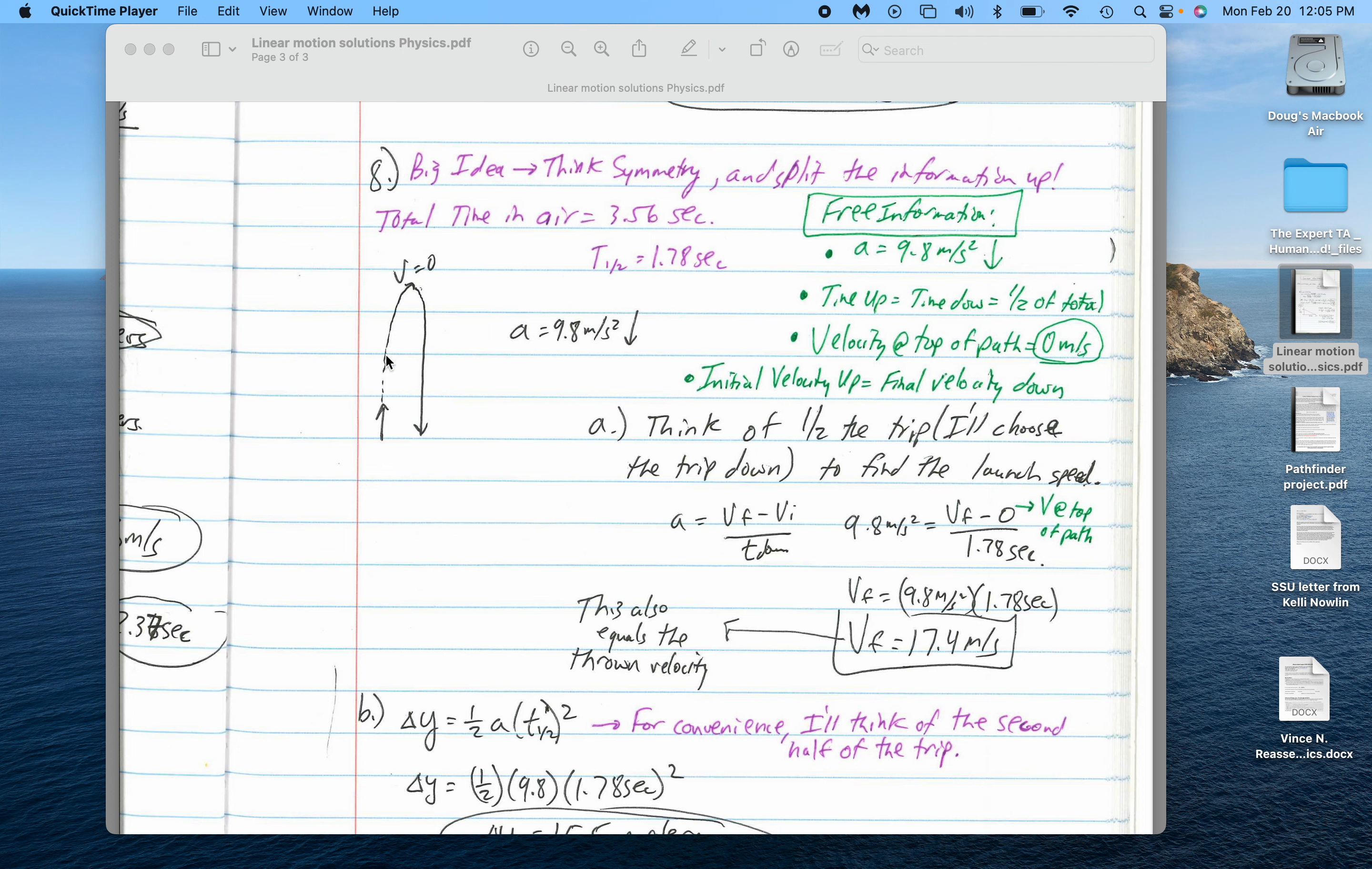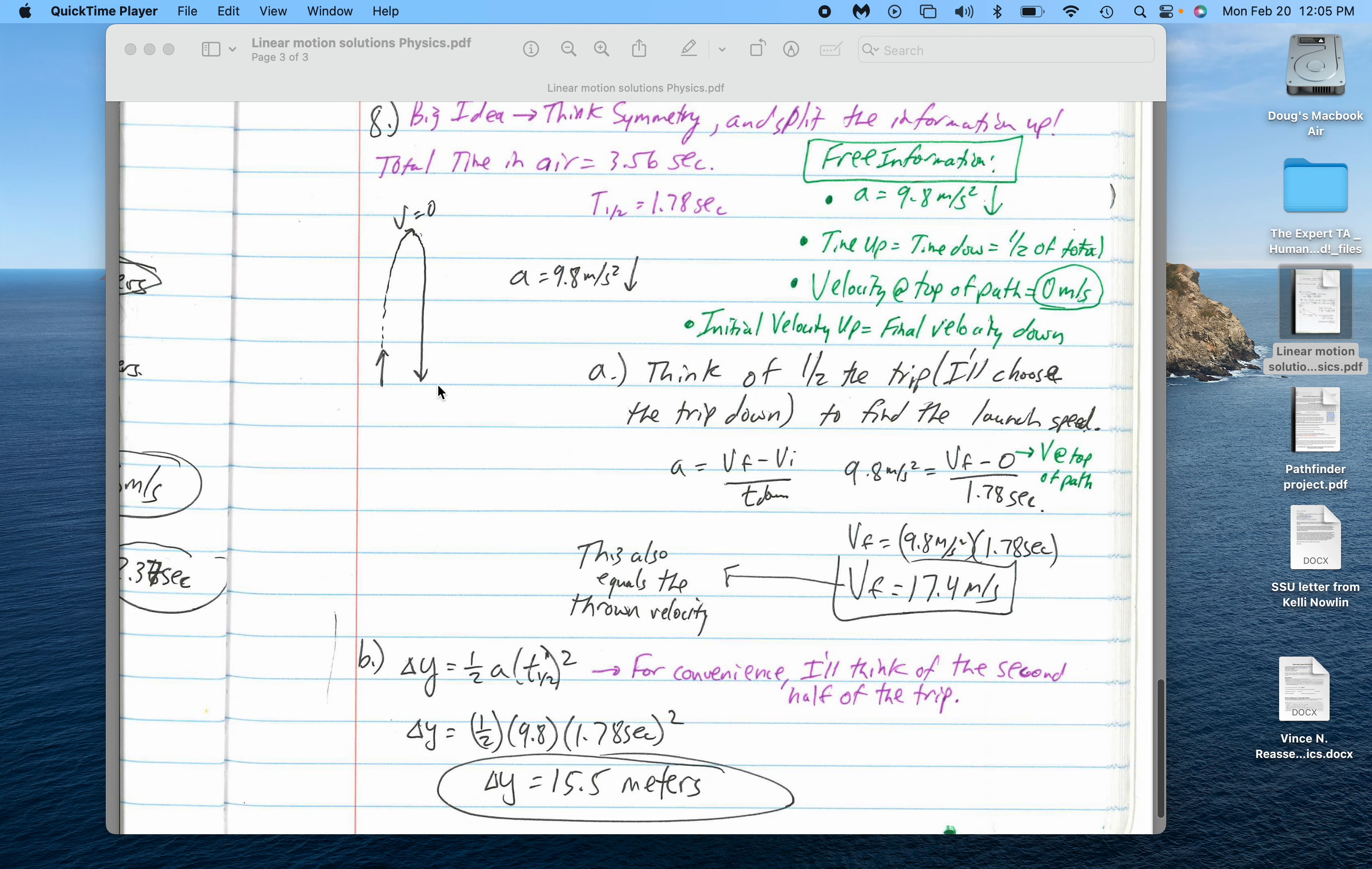And therefore, since gravity is slowing it down on the way up, it's speeding it up on the way down. That means the initial velocity up we call the final velocity down. To solve these types of problems, I like to split them up into parts.